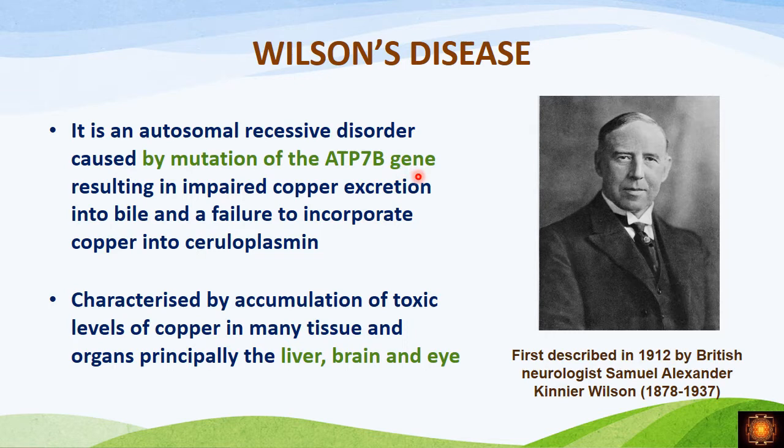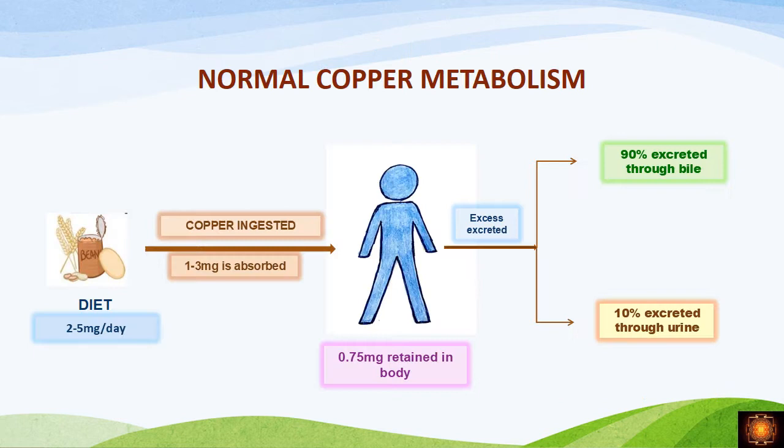When you have a mutation in this gene, the copper cannot be excreted out properly. Instead, we have accumulation of copper in different tissues like the liver, brain, and eye. This disease was first described by British neurologist Samuel Alexander Kinnier Wilson, and the disease is named after him — he described it in 1912 in his patients.